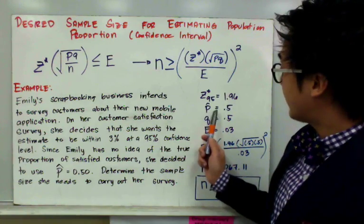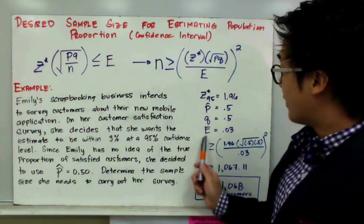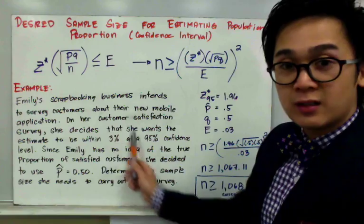Z star of 0.95 after computing it will be 1.96. Our P hat is equal to 0.5, and its complement, which is our Q, is also 0.5. The maximum error is at 0.03, which is here in this problem.